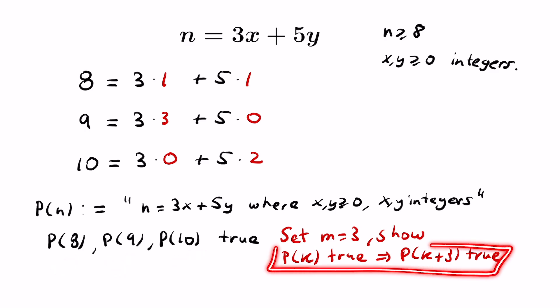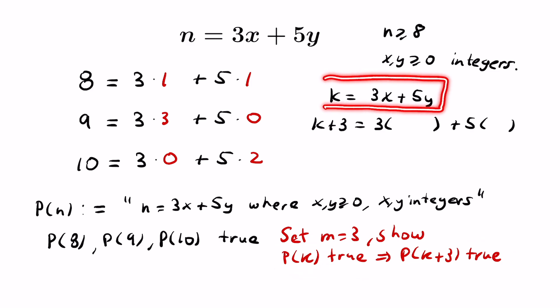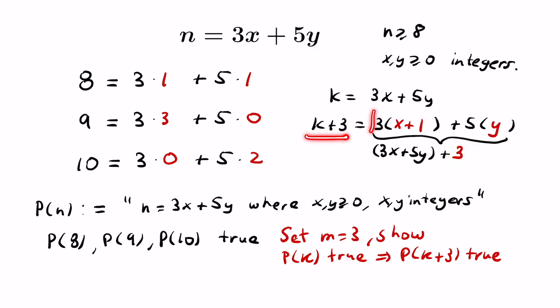So how would we go about proving this statement? We're given that p of k is true, which means k can be represented in this form where x and y are non-negative integers. Our goal is to show that k plus 3 can be represented in the same way. If we keep the same second variable and increase the first variable by 1, the net effect increases the total value by 3. So k plus 3 can be represented in this fashion, and since x and y were non-negative integers, x plus 1 and y will be as well.